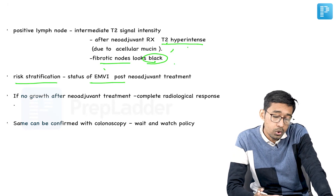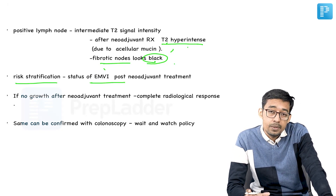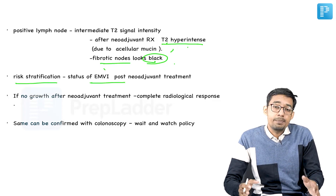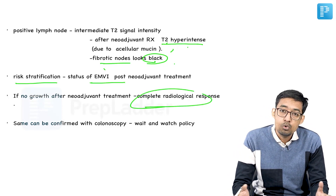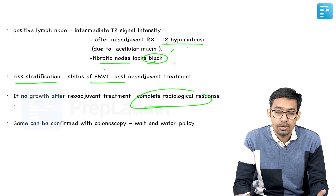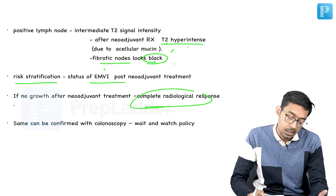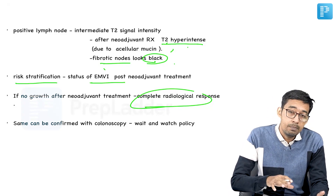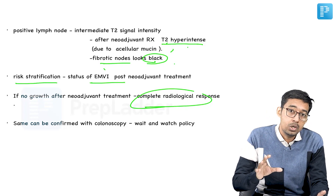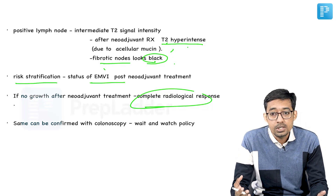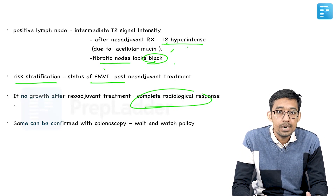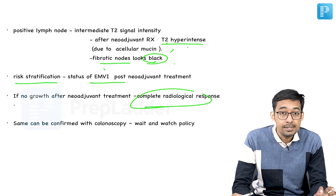If there is no growth after neoadjuvant treatment — suppose there was a growth and it has completely disappeared — that means there is a complete radiological response. There is no tumor signal visible; all the tumor has been eliminated by the neoadjuvant chemoradiotherapy. This is called complete radiological response, which has to be confirmed by colonoscopy because CA rectum is a mucosal disease. So we have to see the mucosa — whether there is any irregularity or any growth on the mucosa which can be seen.